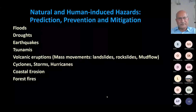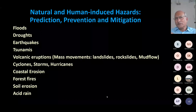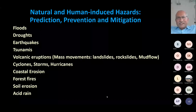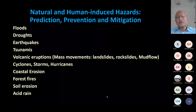Soil erosion occurs when vegetation is removed and topsoil is carried away by rainwater into rivers. Acid rain is a more recent hazard caused by burning fossil fuels, which pumps carbon dioxide into the atmosphere, combining with water to form carbonic acid, or sulfur dioxide combining with water to form sulfuric acid. These acidic waters have a lower pH, react with rocks at a faster pace, affect soil pH, and damage corals in the oceans. Heat waves and cold spells are also mostly due to human-induced reasons.